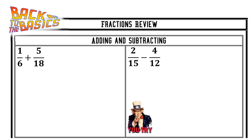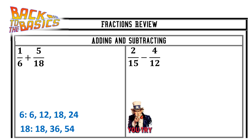For addition and subtraction, you need one very important thing: a common denominator. There are different shortcuts for finding the common denominator, but at its basic definition, the common denominator is the lowest common multiple. So I'm going to list out my multiples — 6 times 1, 6 times 2, 6 times 3, 6 times 4, 18 times 1, 18 times 2, etc. — and find the smallest number, or the least common number, in both lists, so it has to be in both.